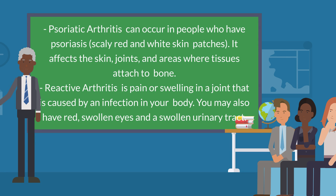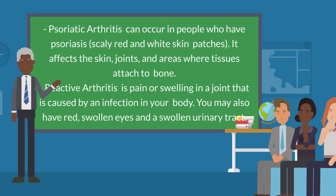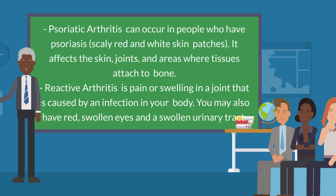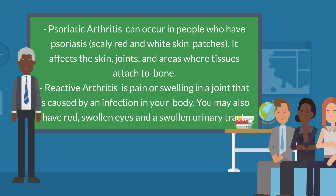Psoriatic arthritis can occur in people who have psoriasis, which causes scaly red and white skin patches. It affects the skin, joints, and areas where tissues attach to bone. Reactive arthritis is pain or swelling in a joint that is caused by an infection in your body. You may also have red, swollen eyes and a swollen urinary tract.